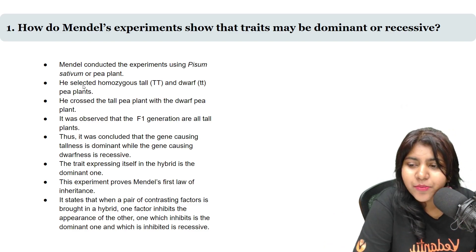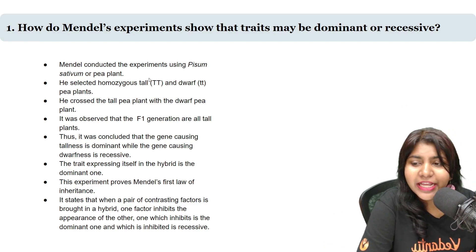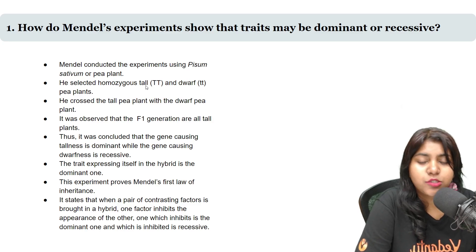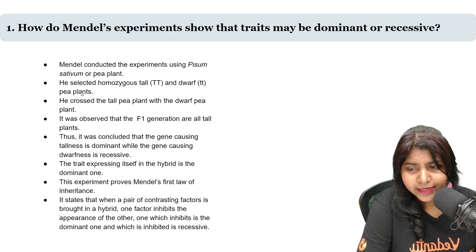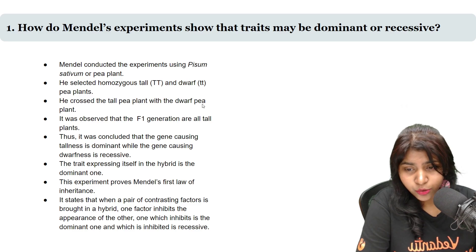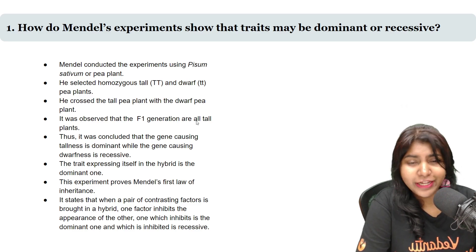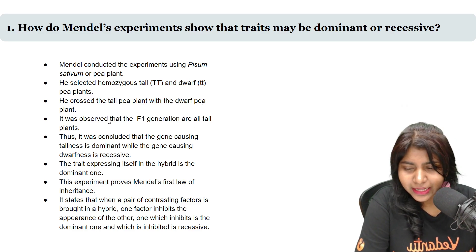So this is the explanation. Mendel used a P plant — a homozygous tall plant crossed with a dwarf P plant. The tall plant crossed with a dwarf plant gives an F1 generation that is all tall plants. This is what we know.